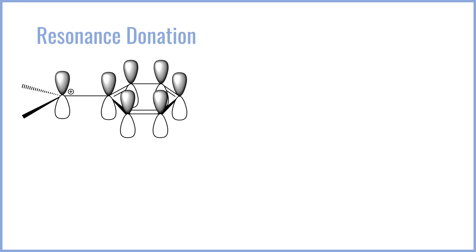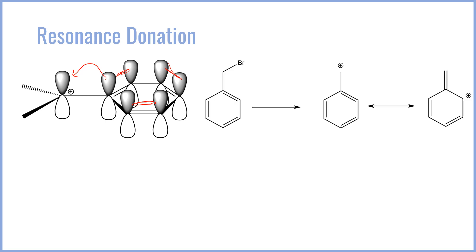Another major thing to consider for cation stability is resonance delocalization. When we have a carbocation adjacent to a benzene ring or a pi bond, the electron density in the pi bond can delocalize and push itself into the carbocation, distributing the positive charge over a larger number of carbons — which is stabilizing. If you can spread out excess charge over multiple atoms, it's more stable than concentrating it on a single atom. So carbocations adjacent to a pi system are going to be more stable, and a compound with a leaving group adjacent to a pi system will more readily undergo an SN1 process.